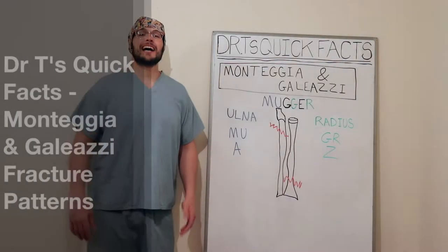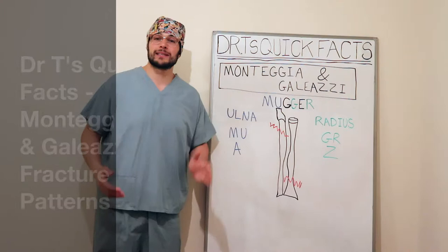Hello and welcome to a test with facts. Today we are going to cover the Monteggia and Galeazzi fracture patterns in the forearm, affecting the ulna and radius bones.